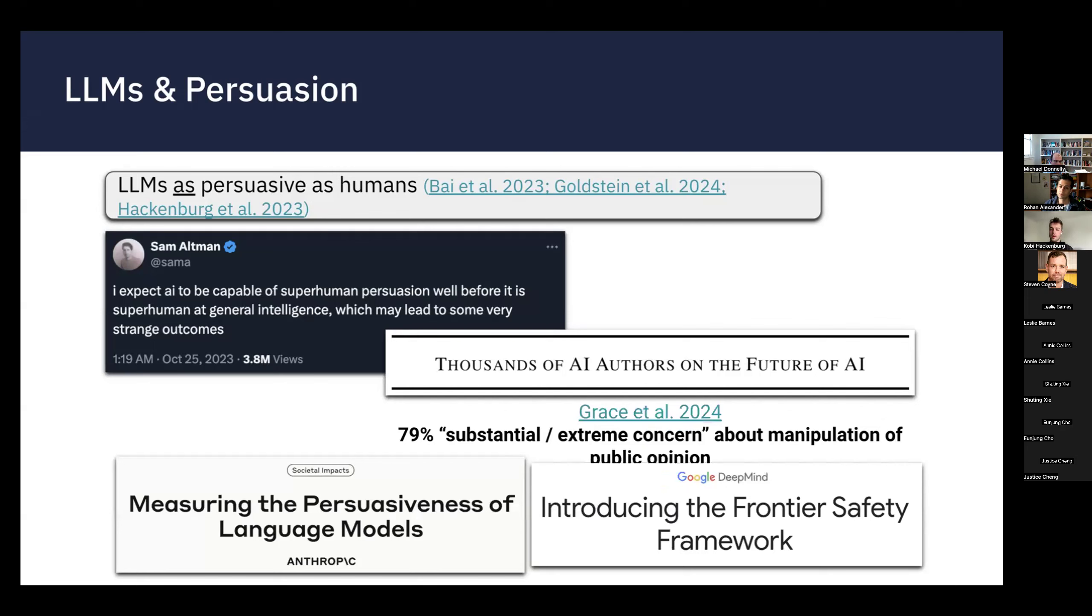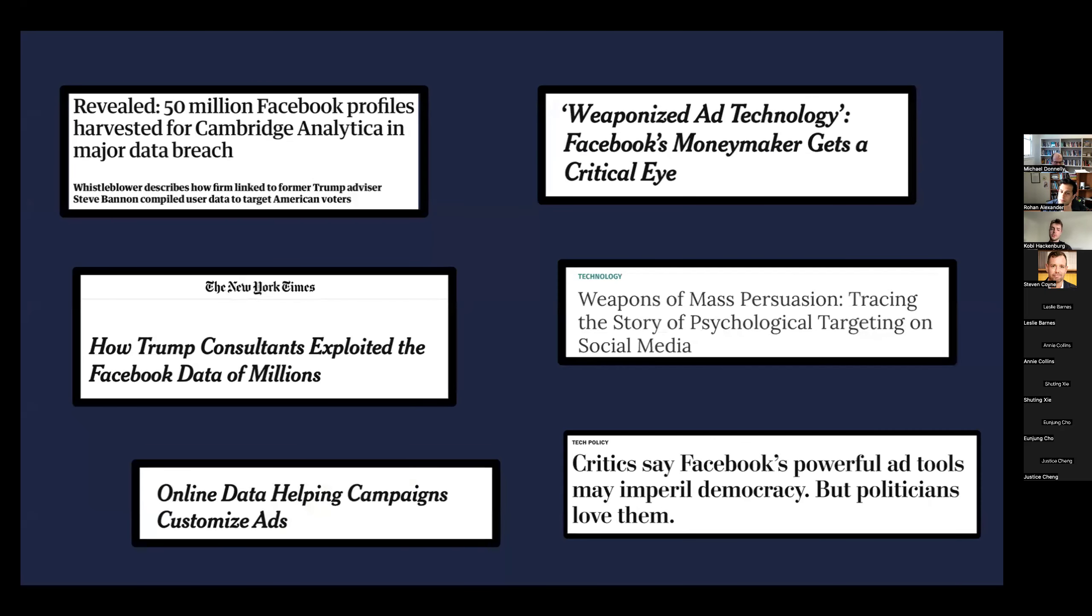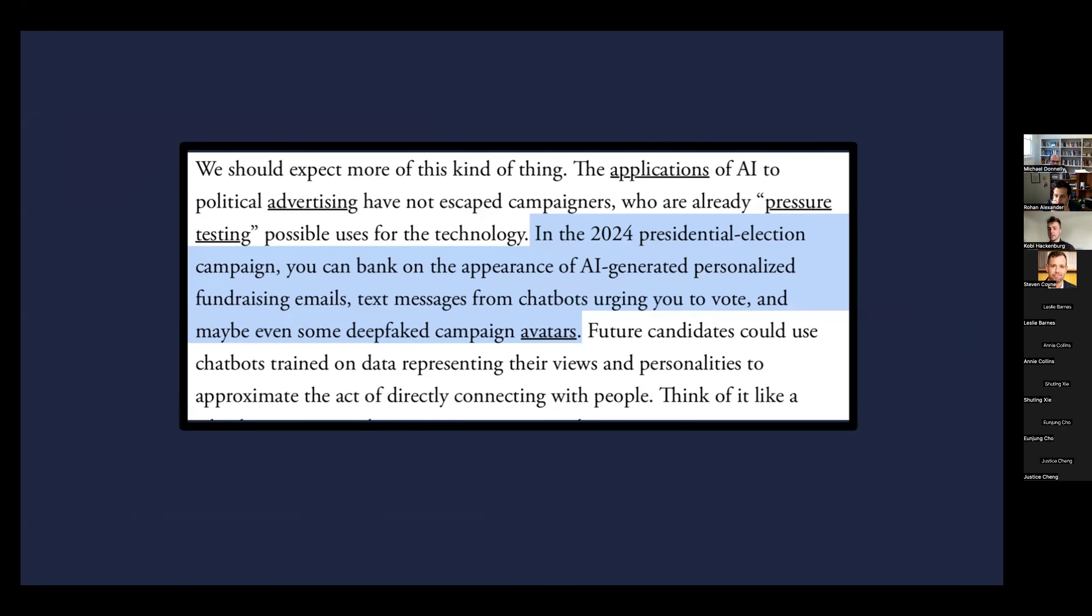In particular, one of the ways that people have theorized that these models will be very persuasive is the fact that they're maybe able to scalably create very tailored personalized content. In the past years since 2016 and the Cambridge Analytica scandal, there's also been this fear or concern about highly targeted political advertising, political messaging and campaigns and other actors using personal data as a means of creating more persuasive targeted political advertising. So synthesizing these two growing concerns, there's been speculation that in this election year, we're going to have a wave of this personalized AI generated content.